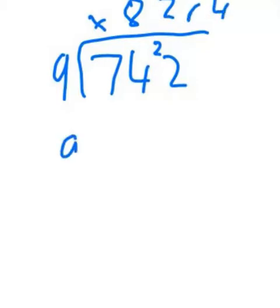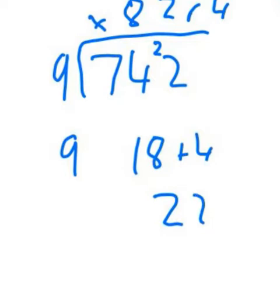And I know that because I know that 1 nine is 9, 2 nines are 18. And then I need to add 4 to 18 to get my 22, which I was looking for.